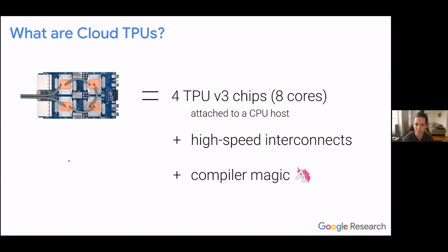What makes the cloud TPU system special are two key features. The first is high-speed interconnects — basically high bandwidth communication links between the cores, so the cores can talk directly to each other without going through the host. The second is the power of compilers. TPUs were designed to be targeted by a compiler, specifically the XLA compiler. Everything is compiled, and this lets us drive the TPU cores more effectively.